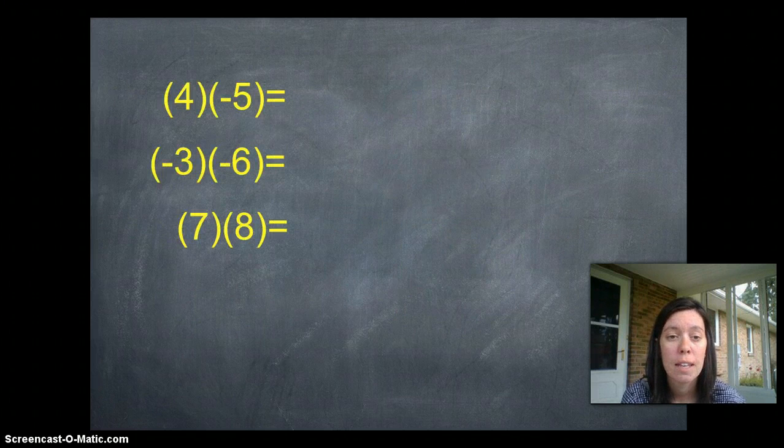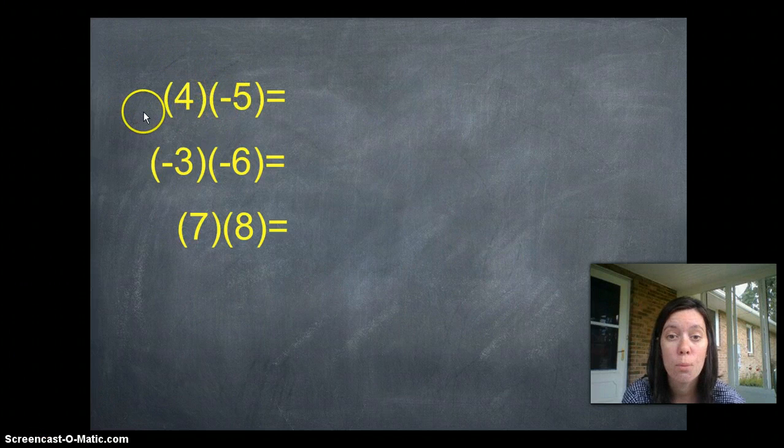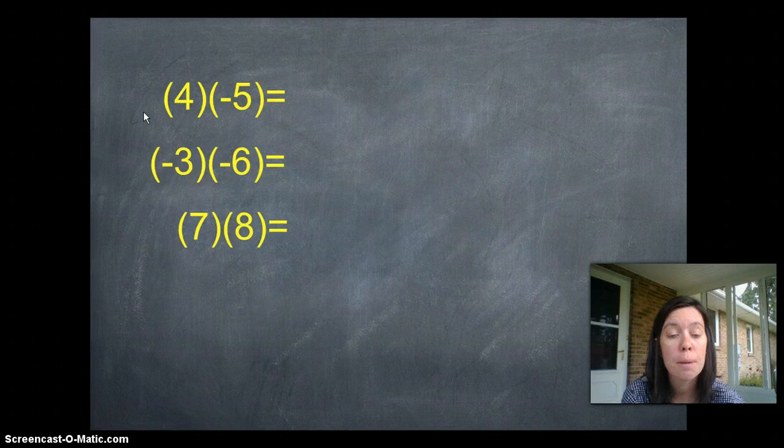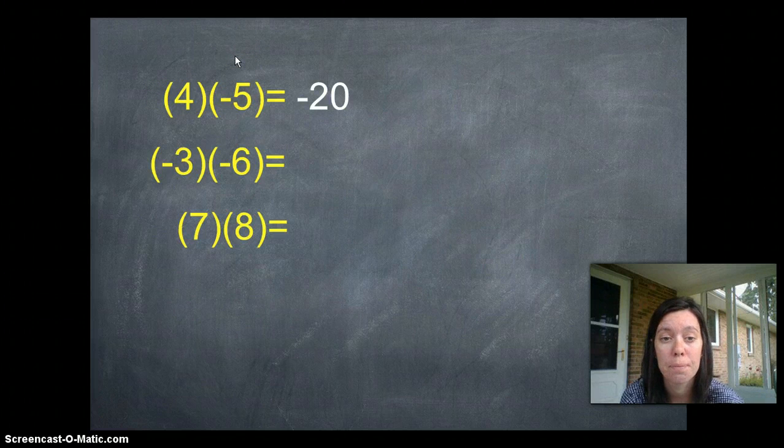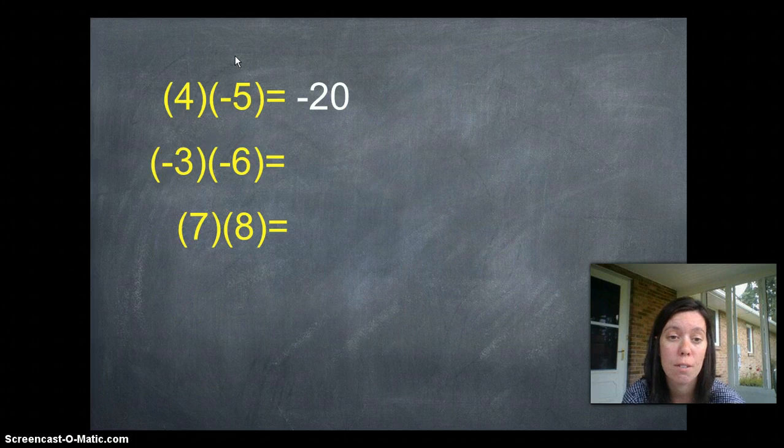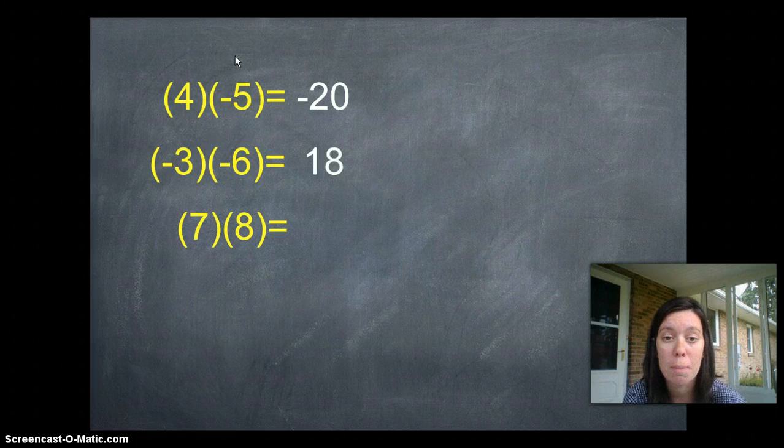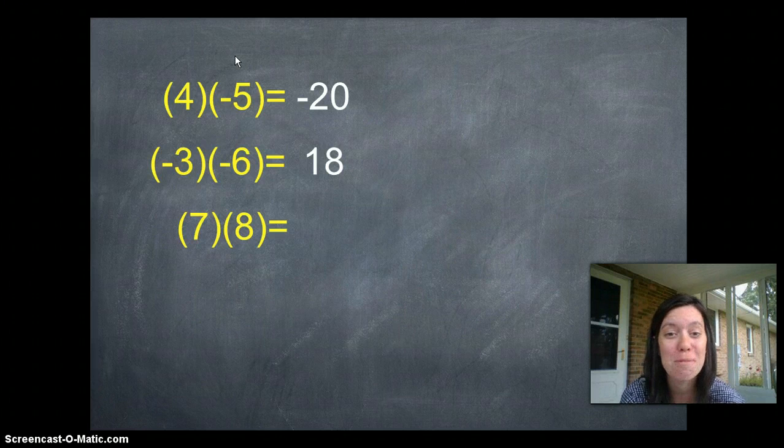So for example, this first equation shows four times negative five. We know four times five is twenty, but the question is, will it be positive or negative? Since we have a positive four and a negative five, that makes a negative answer: negative twenty. Negative three times negative six - the two negatives come together to make a positive. Three times six is eighteen, so that would be positive eighteen. And seven times eight - that's the one I have the most trouble with, it's just the one I always get stuck on - that's fifty-six.